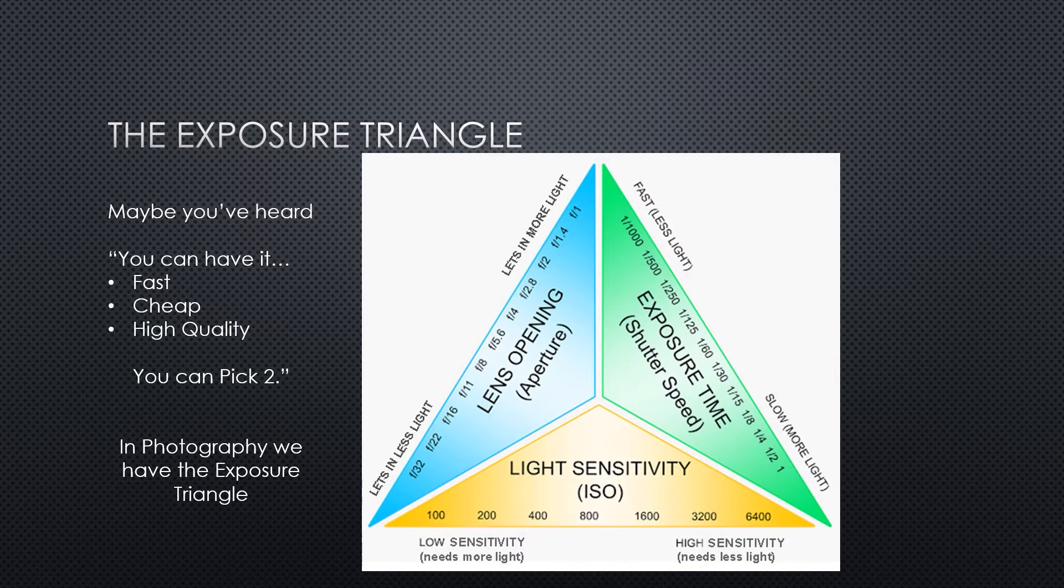The exposure triangle can sometimes look a little intimidating for new photographers, but it really doesn't need to. It's simply a graphic representation that shows that all three variables are linked together, and changing one requires an equal change in one or both of the other variables to achieve the same exposure. There's an old phrase when you're building a house. You can build it fast, you can build it cheap, or you can build it high quality, but you can't have all three. If you want it cheap, you're likely going to sacrifice some quality. If you want it to be good quality and get it fast, well be ready to pay the big bucks. The same can be said for photography. You can adjust all three variables, but you need to prioritize what's most important.